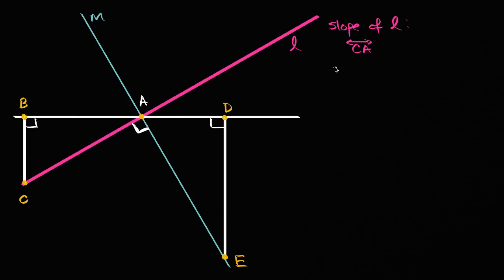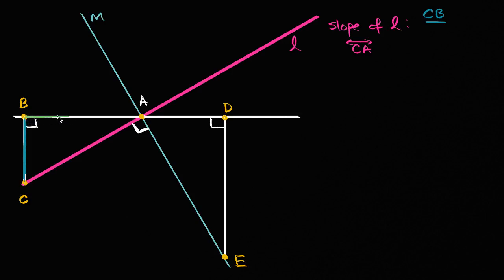L is line CA. To find the slope, that's change in Y over change in X. Our change in Y is going to be the length of segment CB — that is our change in Y. And our change in X is the length of segment BA. So the slope of L is CB over BA.